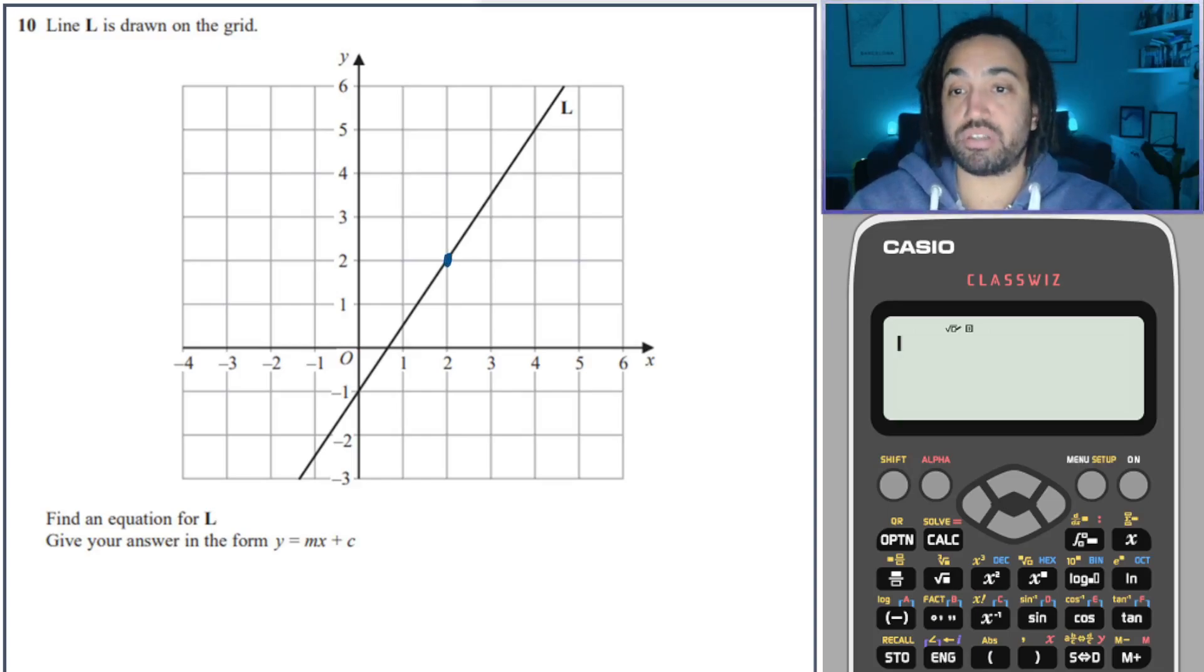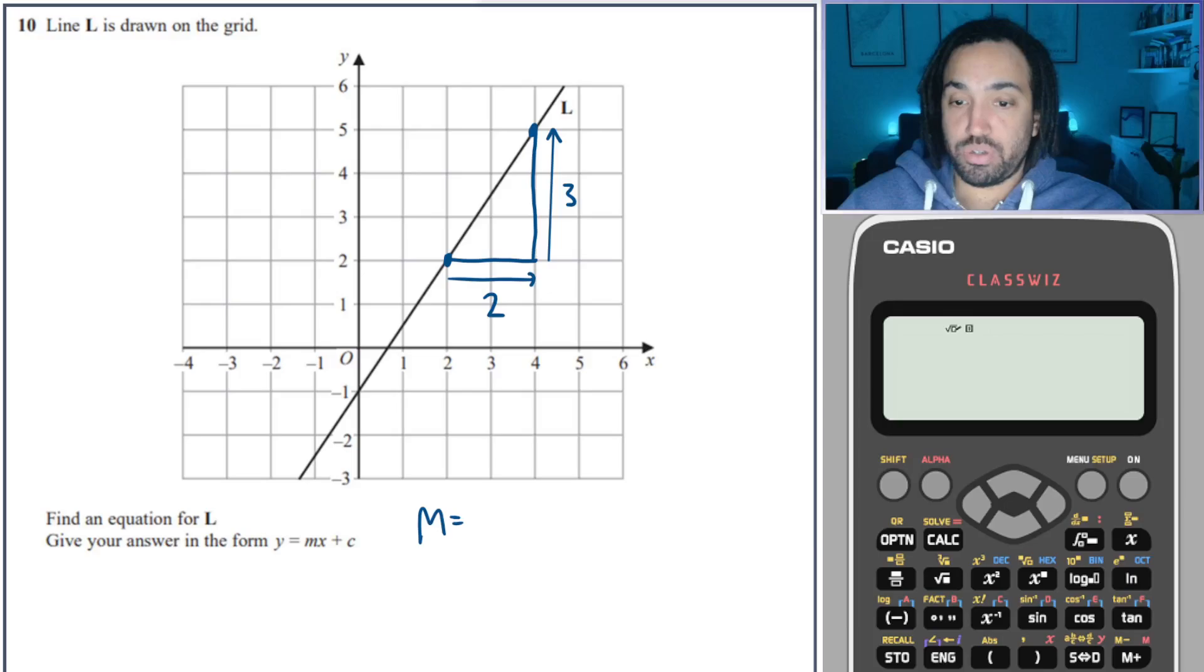Okay, so I'm going to pick two points on my line which are on slap bang on a coordinate, so I'm not going to pick something like this, for example. That would be a really bad idea. I'm going to pick that point there, and I'm going to pick this point here. And then I'm going to draw a triangle in order for me to calculate my rise and my run. So the run is how far it's gone to the right, and in this case it is 2. And then the rise is how far it has gone either up or down, and in this case it has gone up by 3.